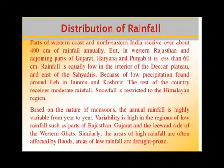On the Western Ghats there are some places which receive more rainfall and others which receive less rainfall. The places that lie on the windward side of the Western Ghats receive more rainfall, while the places situated on the leeward side of the Western Ghats receive less rainfall.